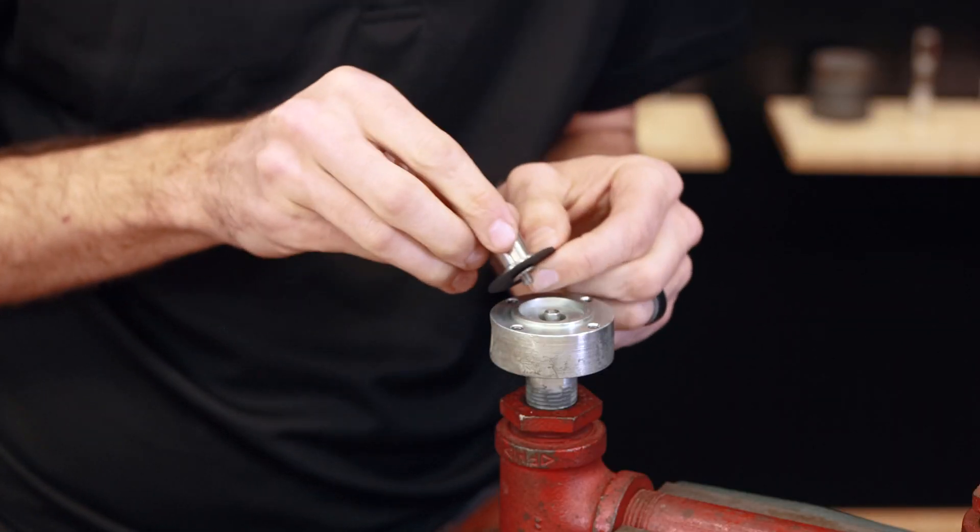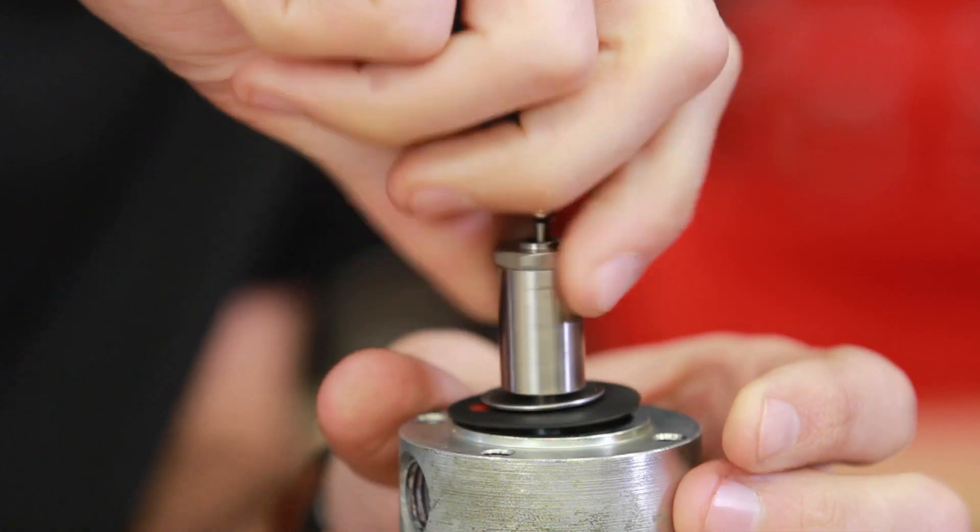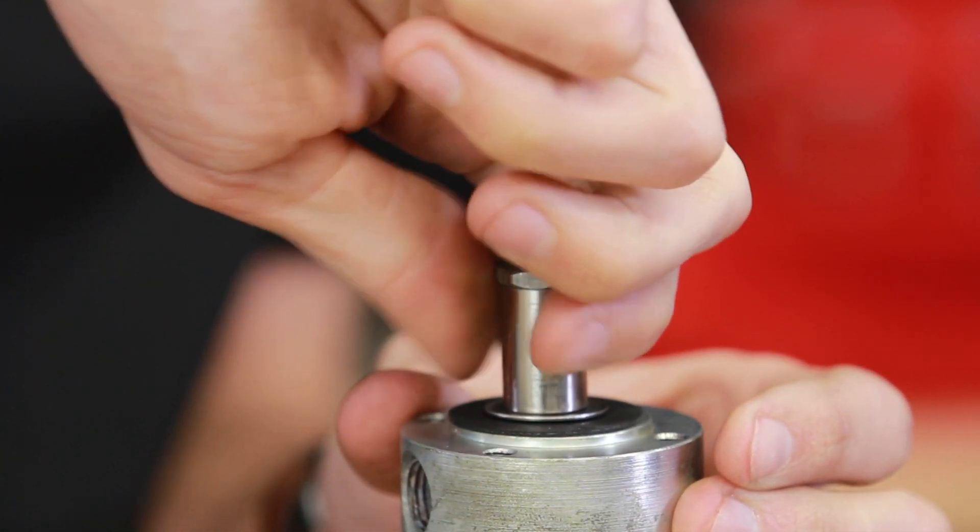Now put the assembly into the low expansion rod and hand tighten. Don't over tighten as this is likely to cause performance issues.